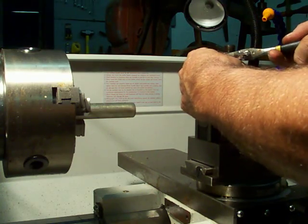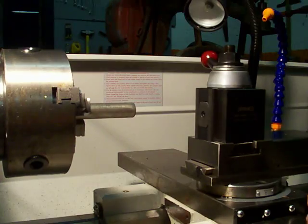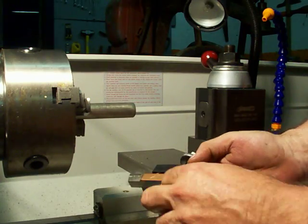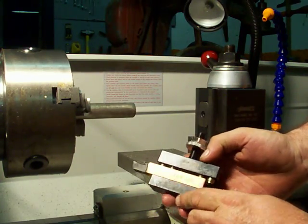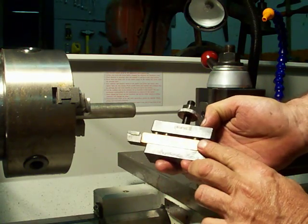Okay, now our tool holder consists of a block with a slot in it for your tool bit, and you've got set screws that hold your tool bit in place.